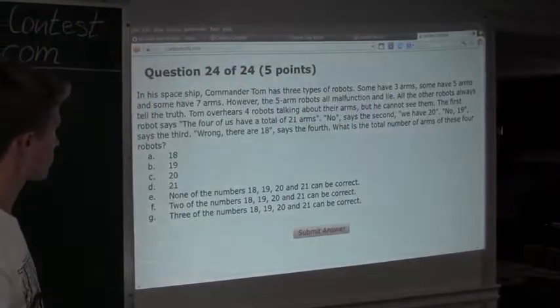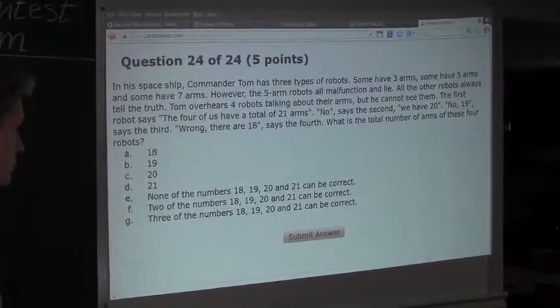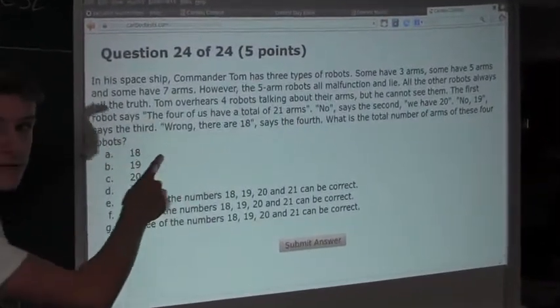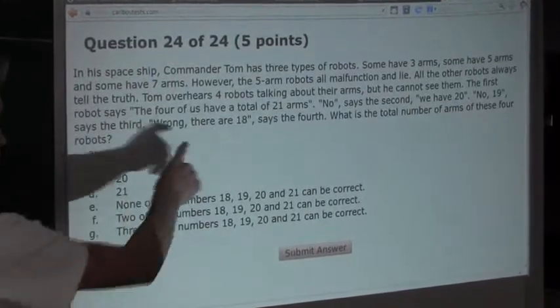Now, if we know that the fourth robot has three arms and must be telling the truth, one of these statements would have to say there are eighteen. And we can see here,